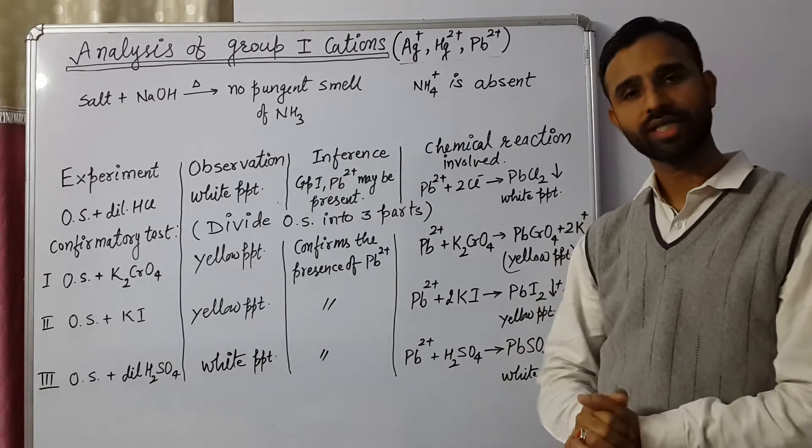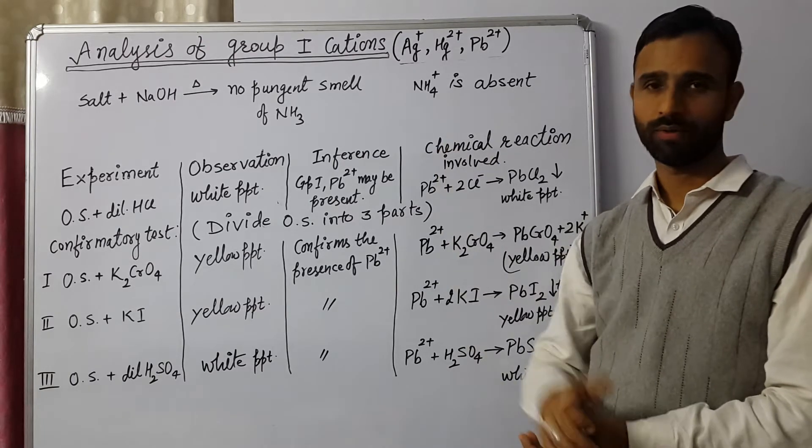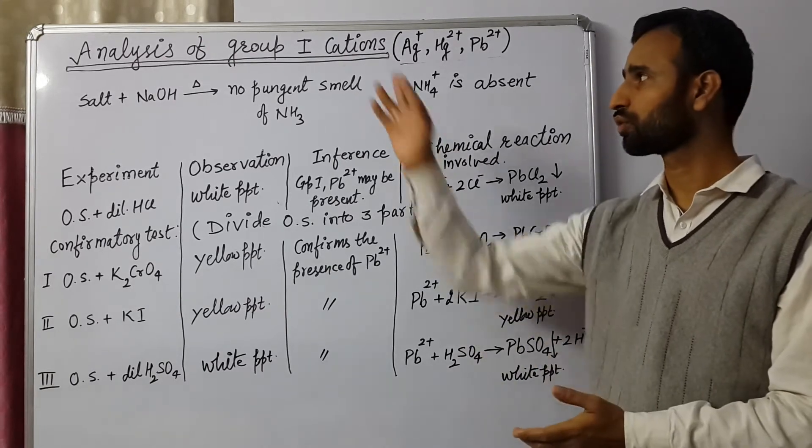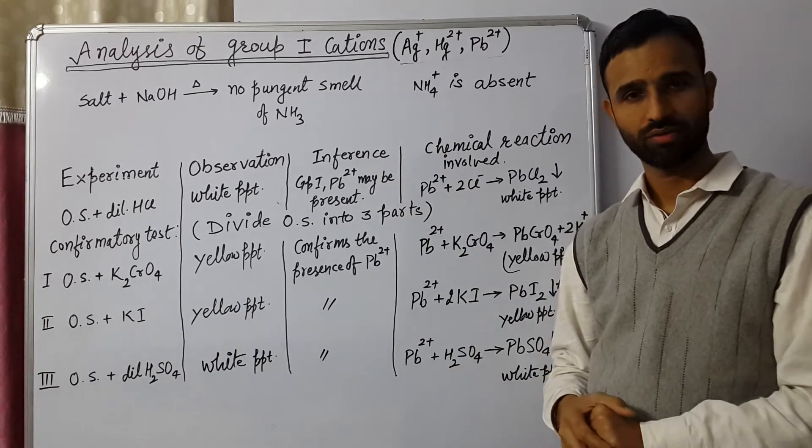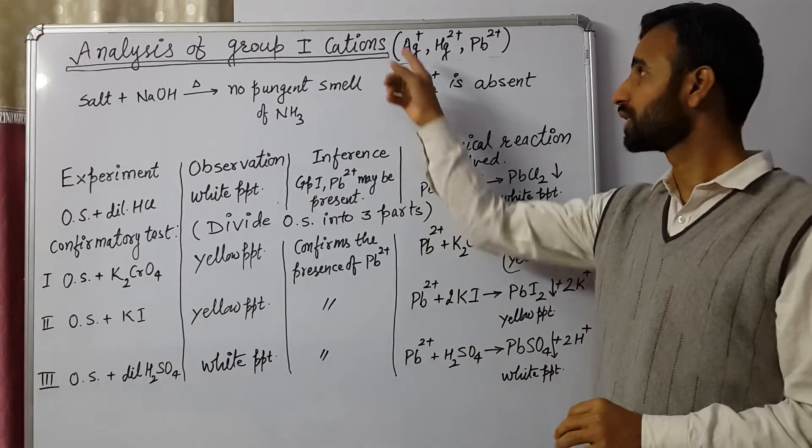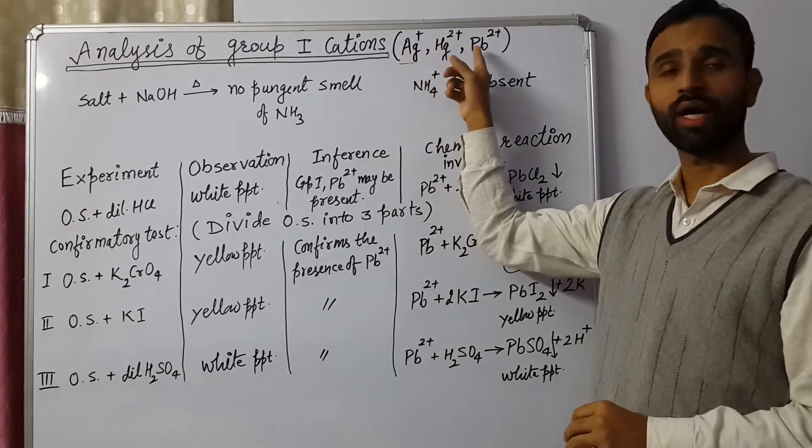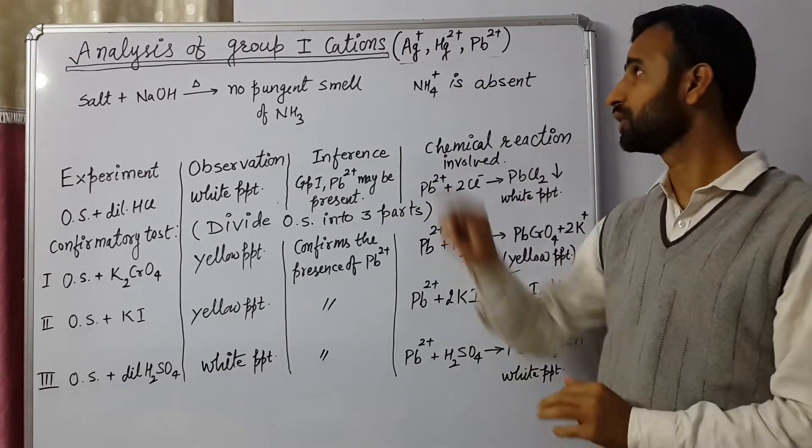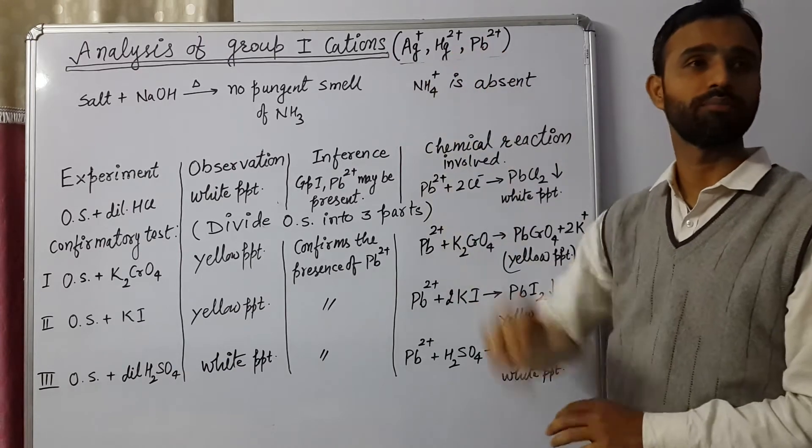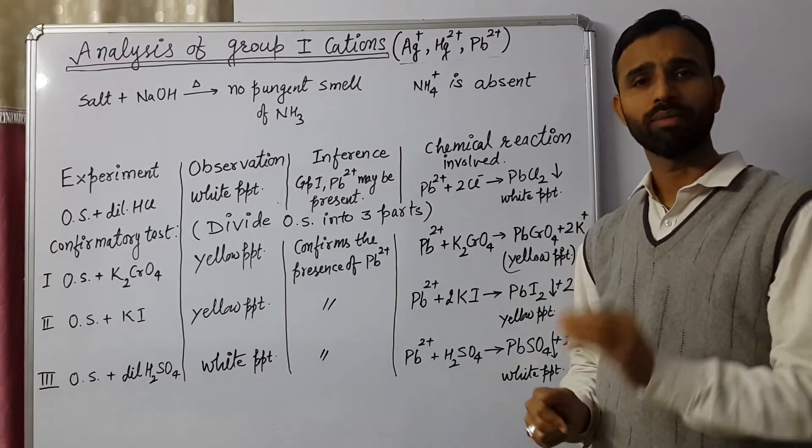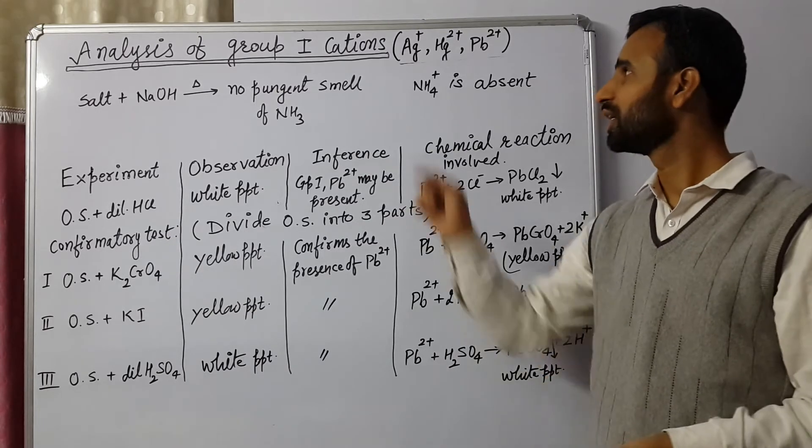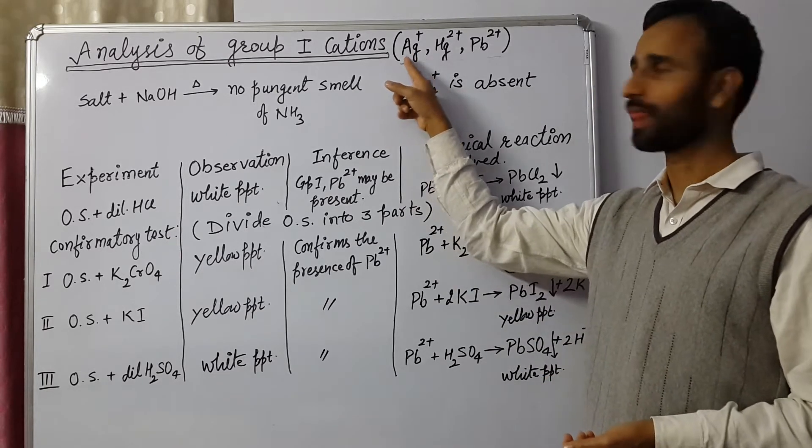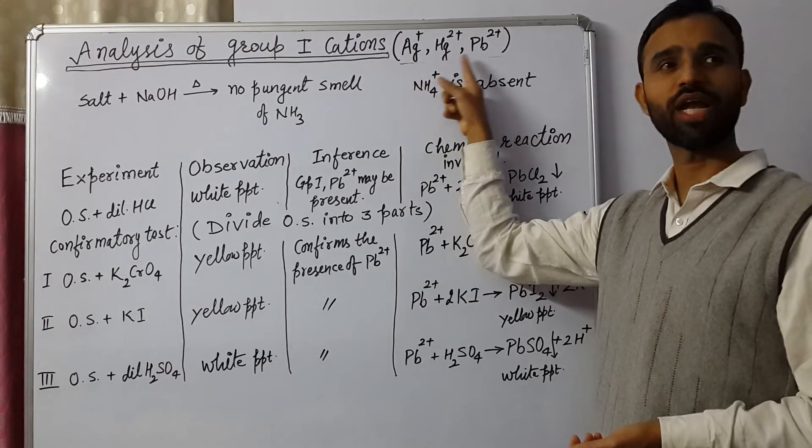Then we go for next group. Next group is group 1. In group 1, we have 3 cations. Those cations are silver, mercury and lead: Ag+, Hg2+, and Pb2+. To remember it, shortcut is mnemonics. We can use Ag Hanji Pilabai.